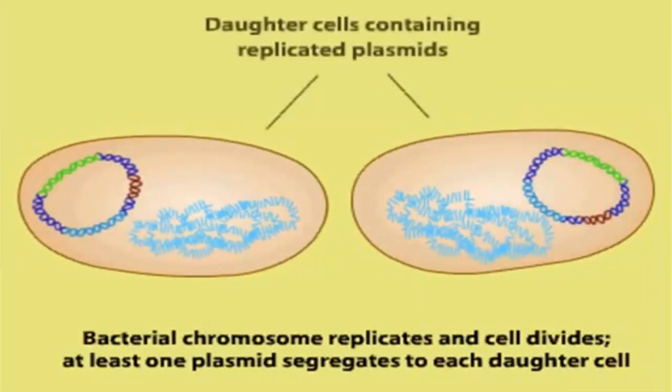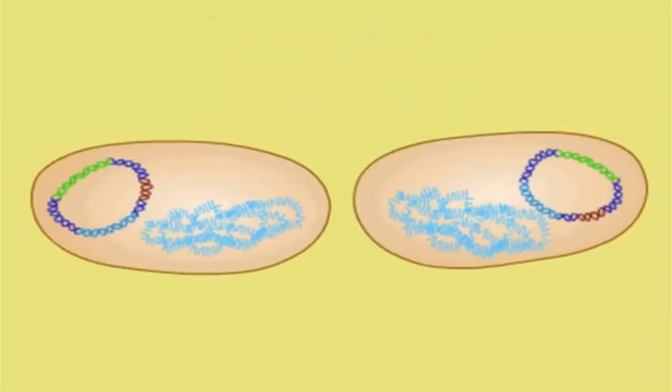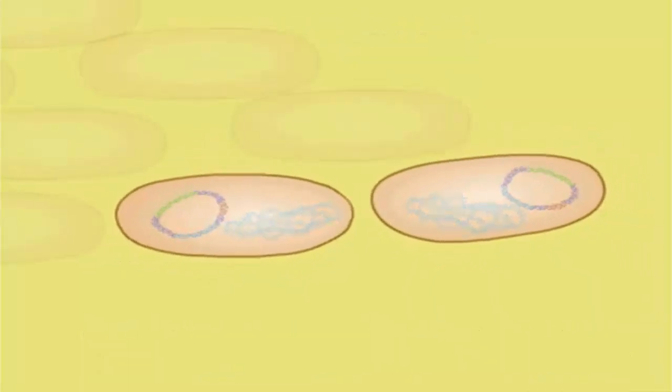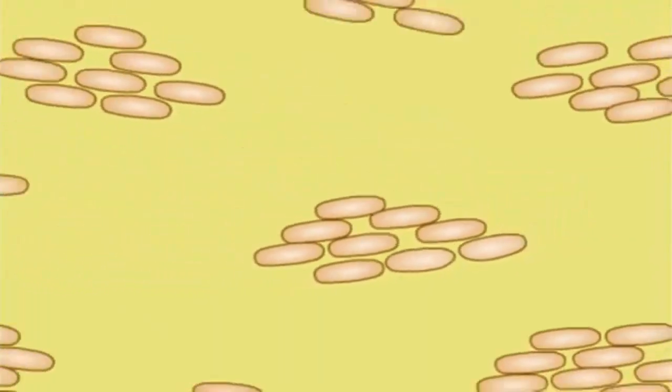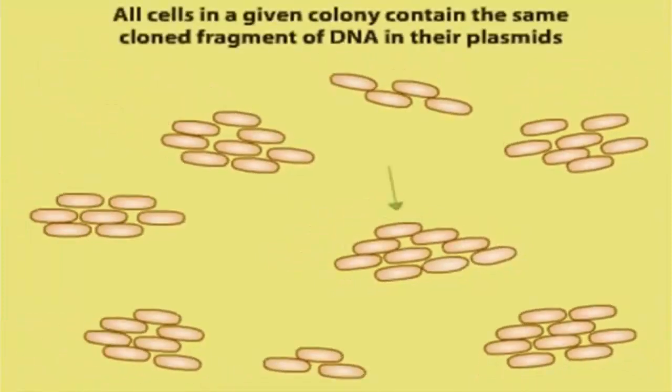As the plasmids replicate and the host cells multiply, the number of copies of the recombinant plasmid is greatly amplified. The multiple daughter cells form a colony or clone. Because all the host cells in a colony are derived from a single cell, they all contain copies of the same recombinant plasmid with its fragment of foreign DNA.